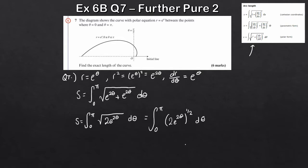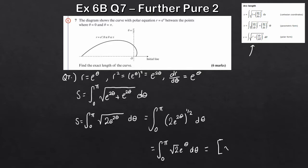If we just start simplifying here — 2θ times one half, remember your index laws — that becomes just theta. And we take the square root of 2 here, since the power of one half means we take the square root. So what we actually get is the integral from 0 to pi of the square root of 2 times e to the theta, with respect to theta. If you just integrate this, nice and easy, we get the square root of 2 times e to the theta. And all we need to consider is applying the two limits, 0 to pi.